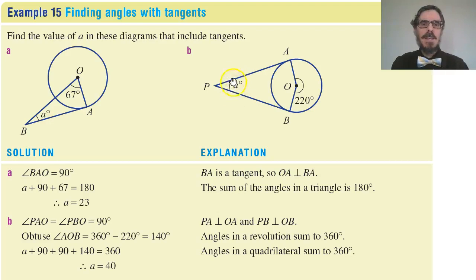OK, so how big is this angle? Well, this one intersects at right angles and this one intersects at right angles. So, if this is 220, how much is this one? That must be 140. 360 minus 220. Now I have 90, 140 and 90 out of a total of 360 in a quadrilateral and I can solve that for A.